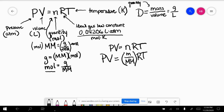I'm going to replace n with mass over molar mass. So grams over molar mass. I'm going to rearrange my equation so that I have mass over volume. And then I can replace it with density.